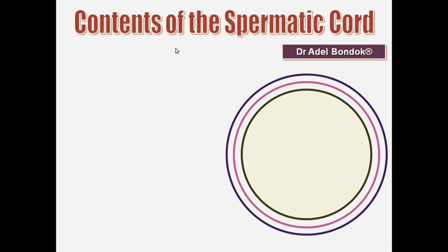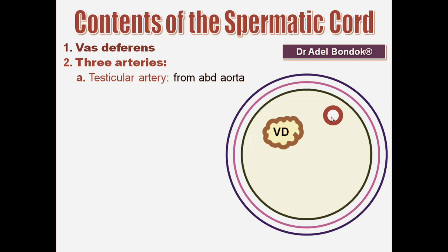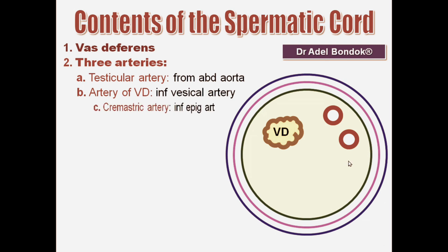Regarding the contents of the spermatic cord, the first content is the vas deferens. Then three arteries: the testicular artery, which is a branch from the abdominal aorta; the artery of the vas deferens, which is a branch from the inferior vesical artery; and the cremastric artery, which is a branch from the inferior epigastric artery.